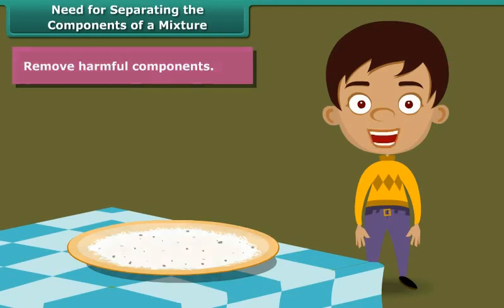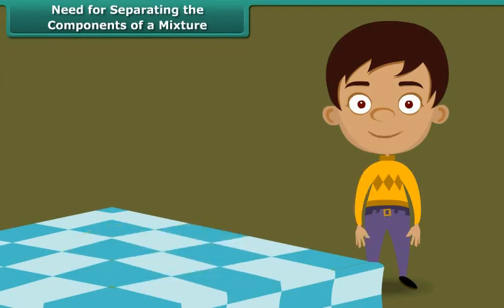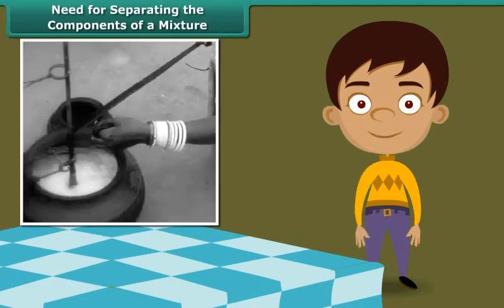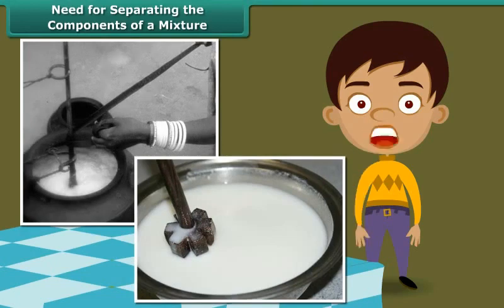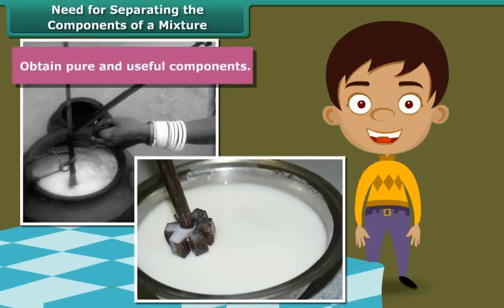When we churn milk or curd, we get two different but extremely useful products: butter and buttermilk. Thus, the third reason for separating the components of a mixture is to obtain pure and useful components.